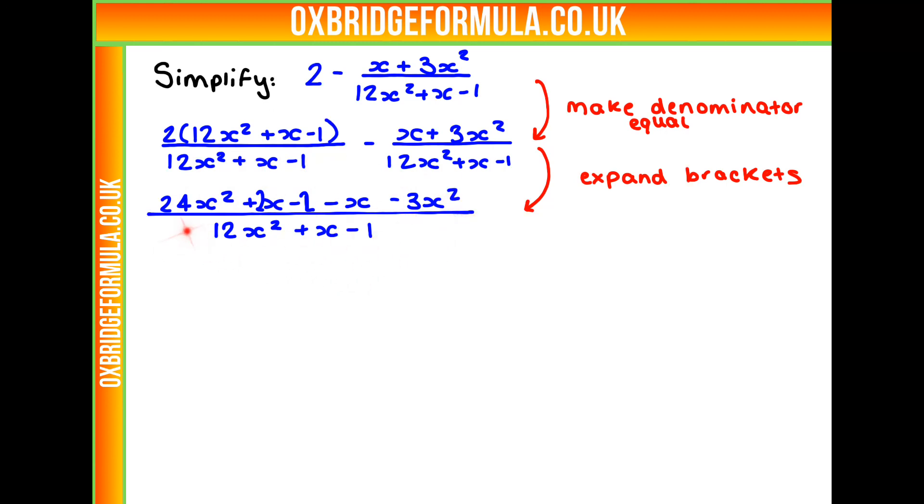So it now looks something like this: 24x squared plus 2x minus 2 minus x minus 3x squared. Now take care with this sign here. Because we're taking away all of this, we need to make sure that this plus is also changed into a negative.